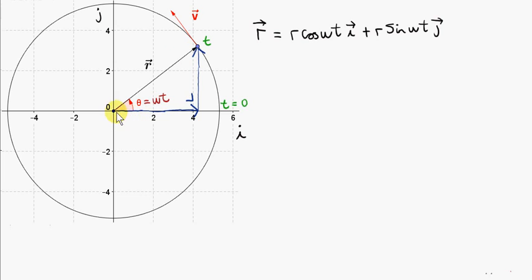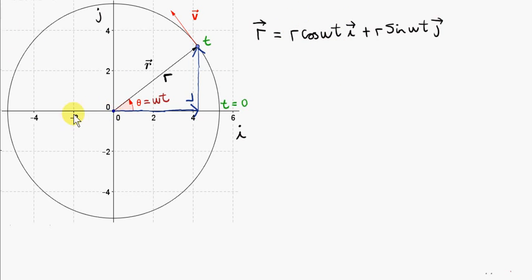We can resolve vector r into its horizontal and vertical components. To get the horizontal component, we multiply the magnitude of vector r — just r without the arrow — by the cosine of angle theta. Theta is measured anticlockwise from the positive x-axis, so if we multiply r by cos of omega t, we will have the i component of the vector. When theta is an acute angle, between 0 and 90 degrees, cos of omega t will be positive. If theta is obtuse, between 90 and 180, cos of omega t will be negative and the i component will be negative. Similarly for the j component.